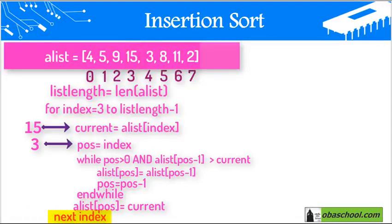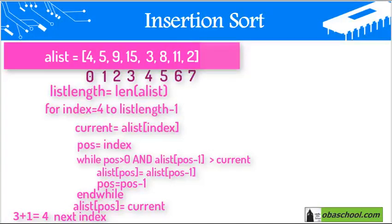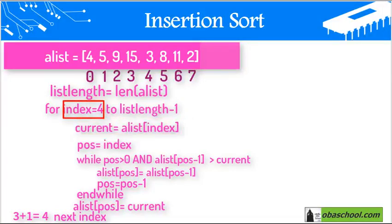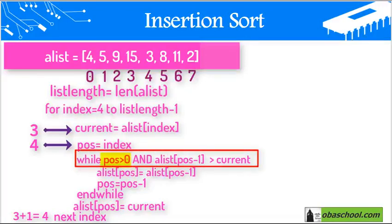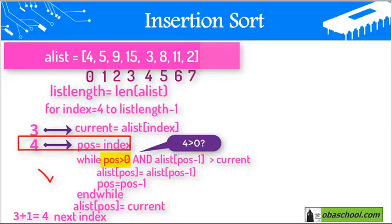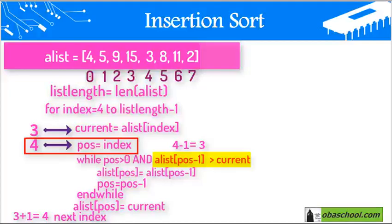We continue to the next index. Now the index is incremented by 1, so it's 4. For index equal 4 to list length minus 1, we are putting in variable current the value at list index 4. Now we enter the while loop: while pause (which is 4) is greater than 0, this condition is true. And list[pause-1], which is 4 minus 1 = position 3, the index 3 contains 15.